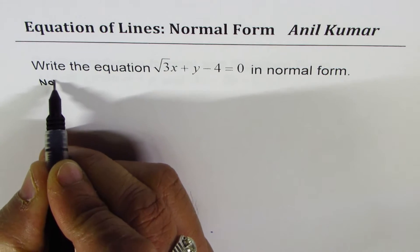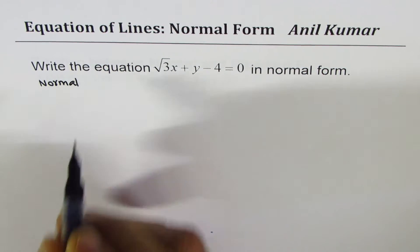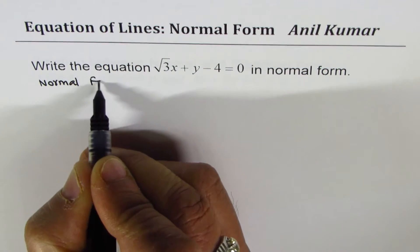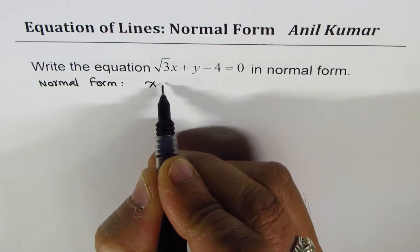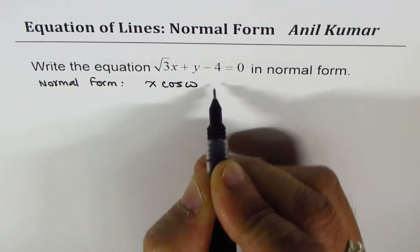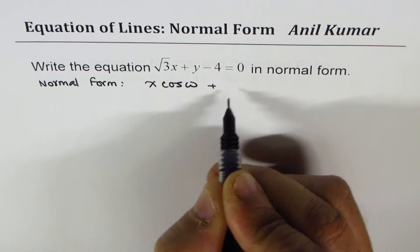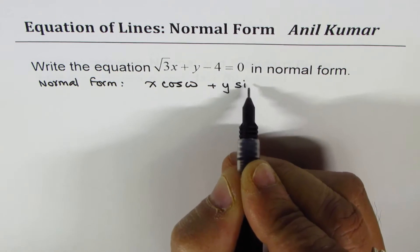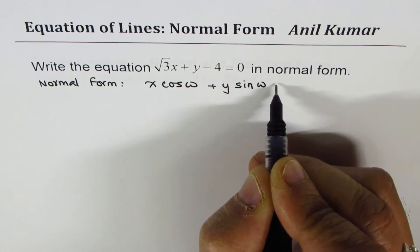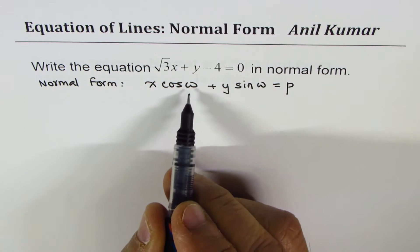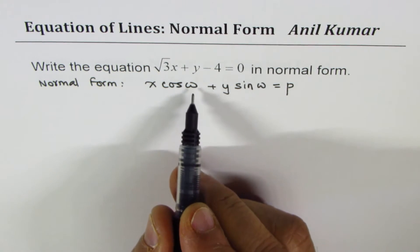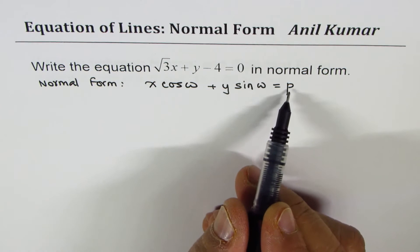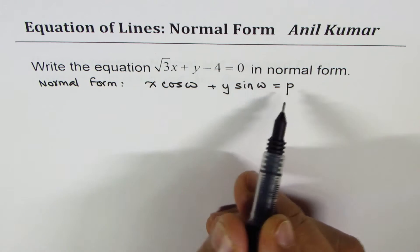What is normal form? The normal form of the equation is x cos ω + y sin ω = p, where ω is the angle which the normal makes with the line, and p is the perpendicular distance — the distance of the line from the origin.